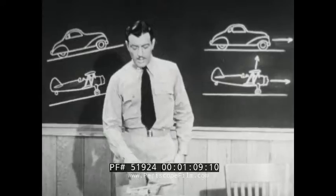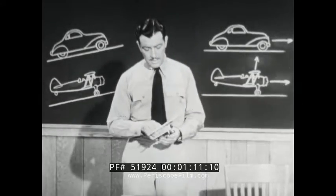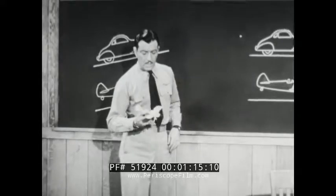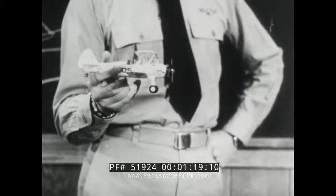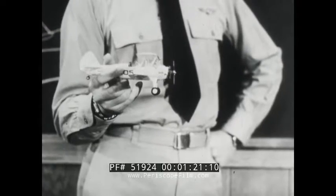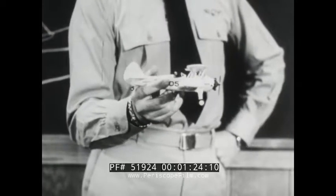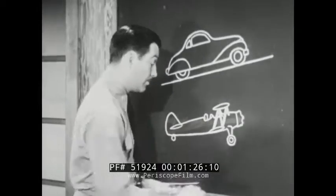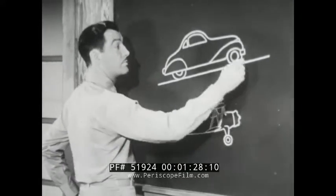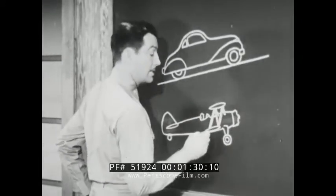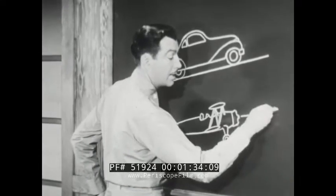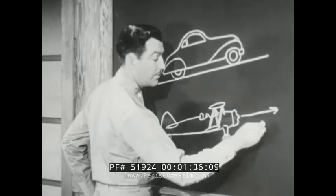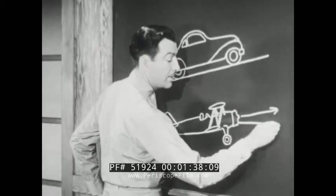Driving along a level highway in an automobile, if you close the throttle by taking your foot off the gas, you simply slow down and stop. In an airplane in level flight, if you cut off the power and hold the plane level, as soon as its forward motion falls below a certain speed, it will start to sink. An automobile going uphill is traveling in the direction its nose is pointing, but an airplane may have its nose pointed up in a climbing attitude and still be flying a perfectly level course, not climbing at all.